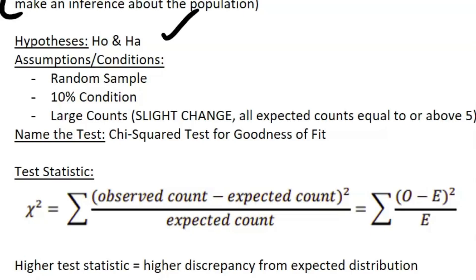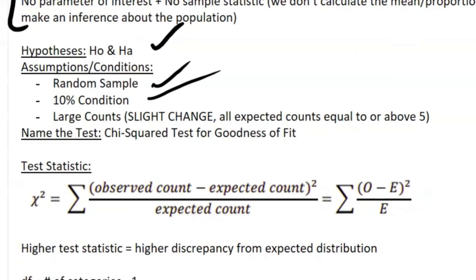Then your assumptions and conditions: a random sample, the 10% condition, your large counts—except now instead of it being above 10, it has to be equal to or above 5. I don't know why that is. Name the test: chi-squared test for goodness of fit.